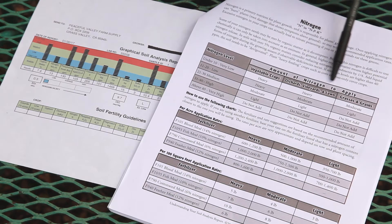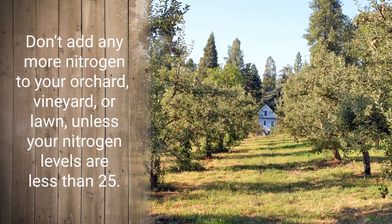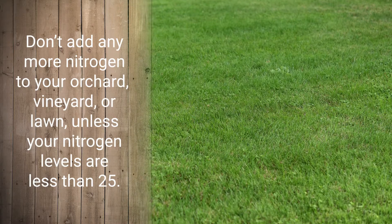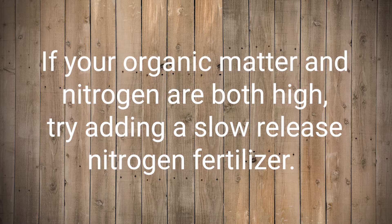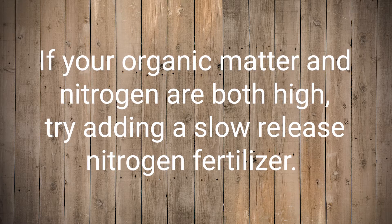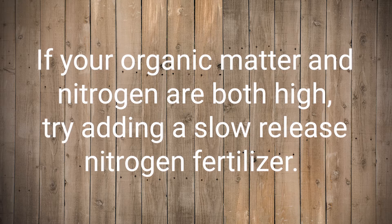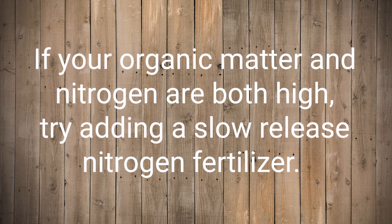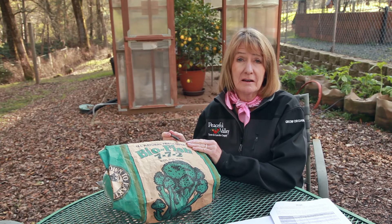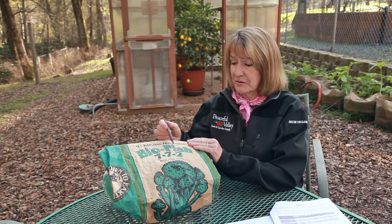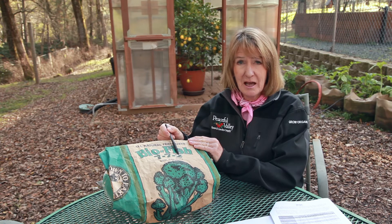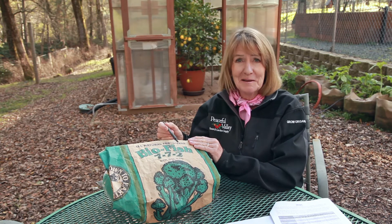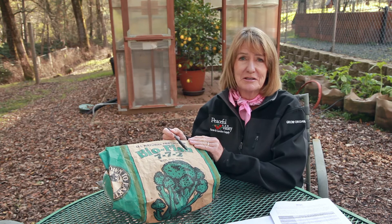Use the chart in your booklet to determine the rate. Orchards, vineyards, and lawns require less nitrogen and don't need any added unless the analysis is less than 25. But before applying fertilizer, you'll also want to look at your levels of organic matter. If your levels are very high, some of your nitrogen is tied up there — you may want to consider adding a slower release nitrogen like feather meal instead of fish meal. This will give your plants a slower feeding of nitrogen. Also keep in mind that most organic fertilizers contain other nutrients. For example, in this biofish it's 7% nitrogen, 7% phosphorus, and 2% potassium. You may want to review your entire soil analysis report before choosing which nitrogen fertilizer to use.